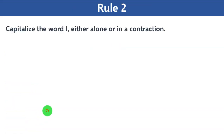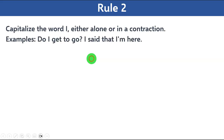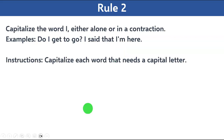Let's move on to rule number two. Rule number two says: always capitalize the word 'I' — either alone or in a contraction. Whether the word 'I' is at the beginning of a sentence, in the middle of a sentence, or is part of a contraction, you will always capitalize it. For example, 'Do I get to go?' — 'I' is in the middle of a sentence and has to be capitalized. 'I said that I'm here' — 'I'm' is short for 'I am,' so even as a contraction, 'I' is capitalized.